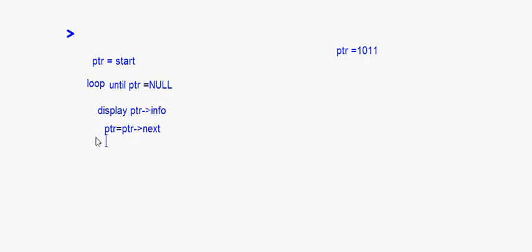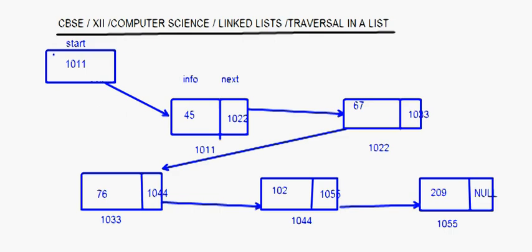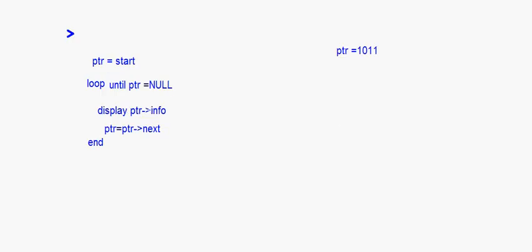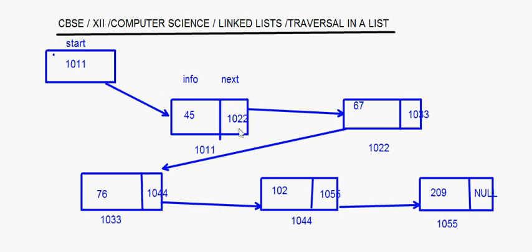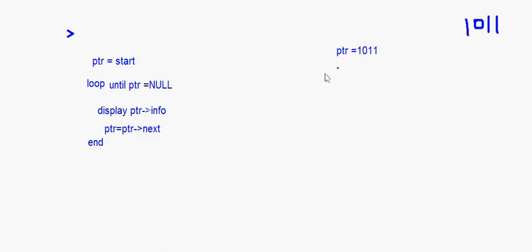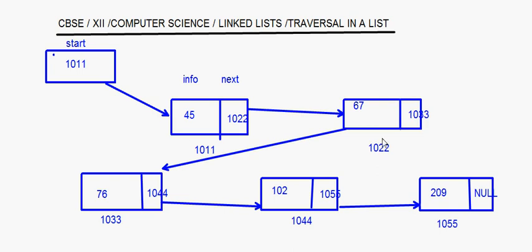After setting ptr equal to ptr next, the loop closes. Now ptr is one zero one one, so it will print that node's info. After that, ptr becomes equal to ptr next. The next of one zero one one is one zero two two, so ptr becomes one zero two two.